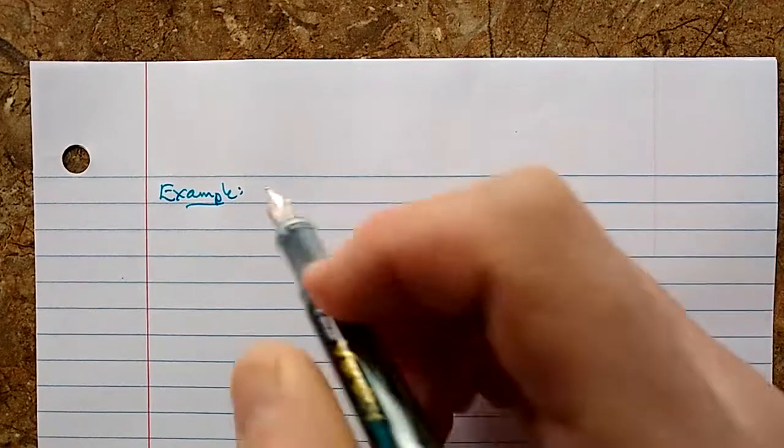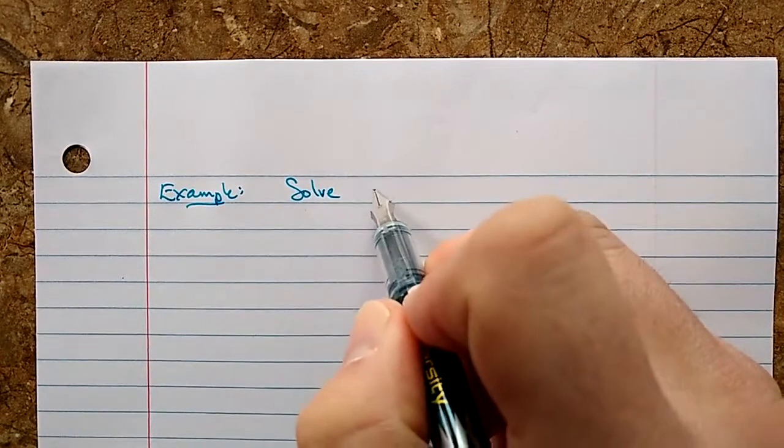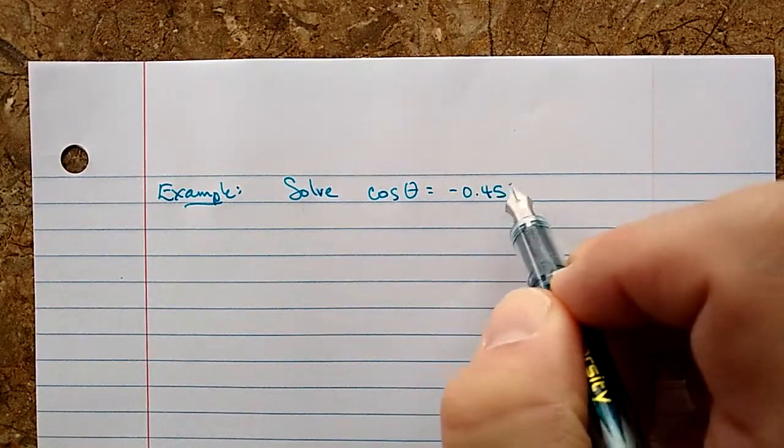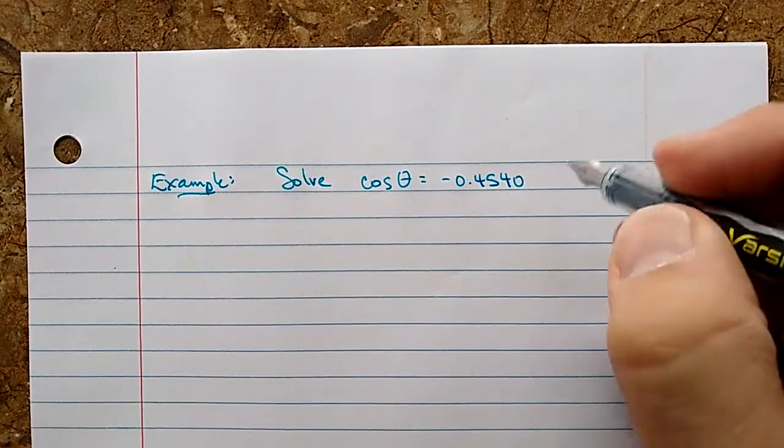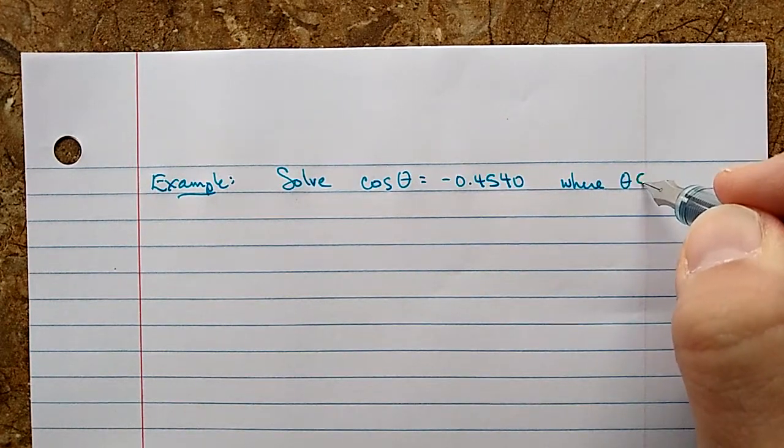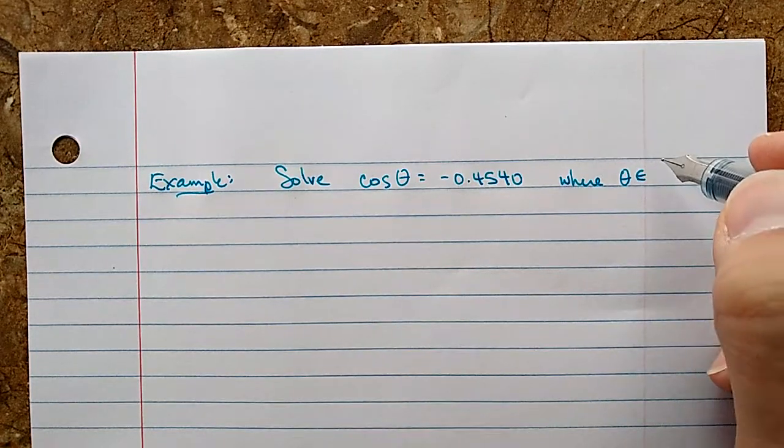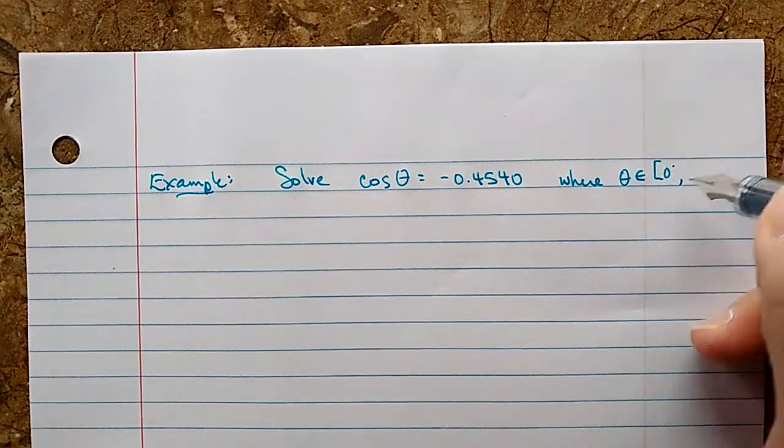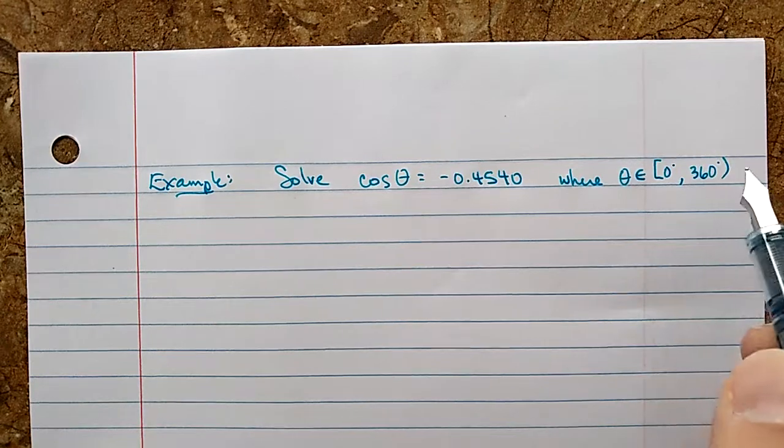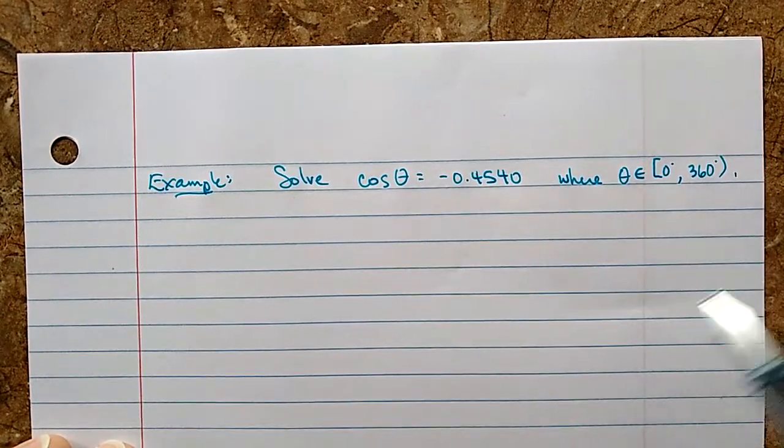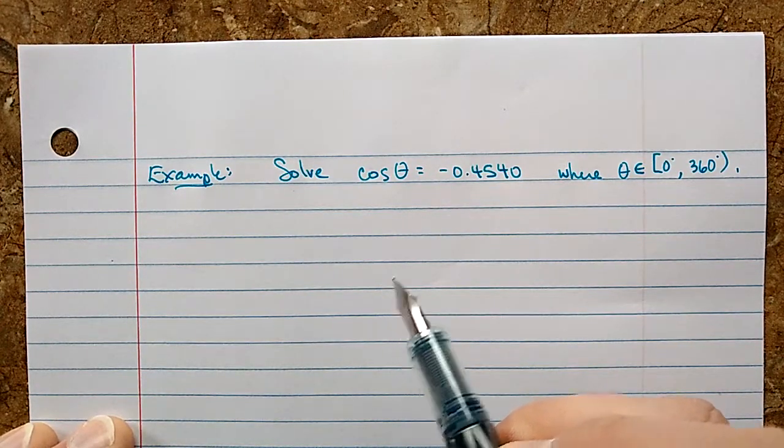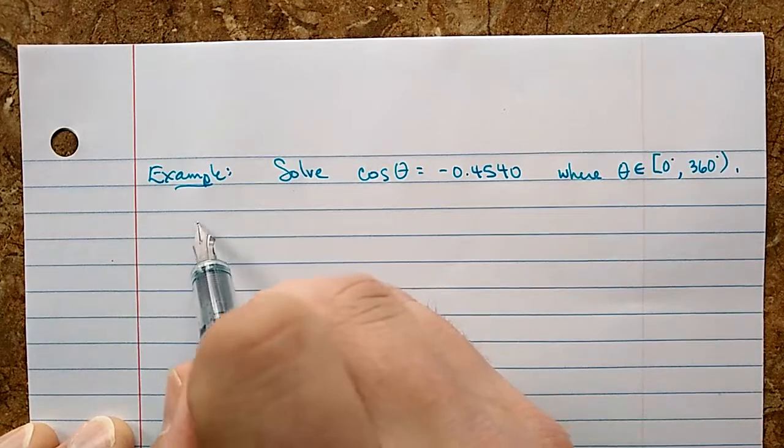We're going to word this one a little bit differently. Solve: cosine theta equals negative 0.4540, where theta is in interval notation from 0 degrees to 360 degrees, with a round bracket meaning it's anything from zero up to 360 but don't include 360. Just fancy notation for exactly the same thing we said before. Let's start with finding that inverse.